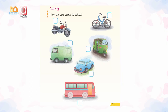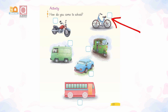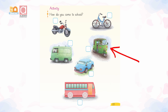Now look at the given pictures and tick the box which is showing the picture you use to come to school. Do you use a bike? Do you use a cycle? Do you use a school bus, a rickshaw, a car, or a van? Ready?